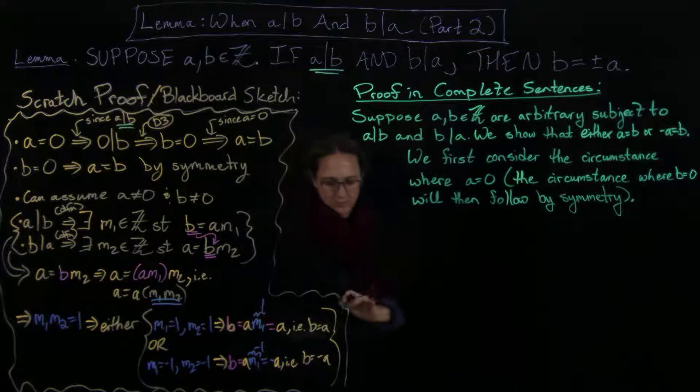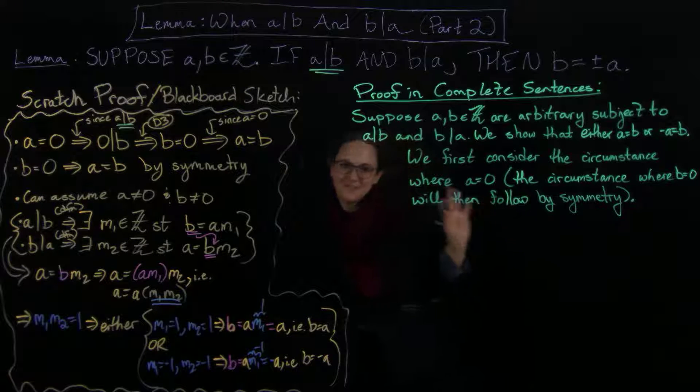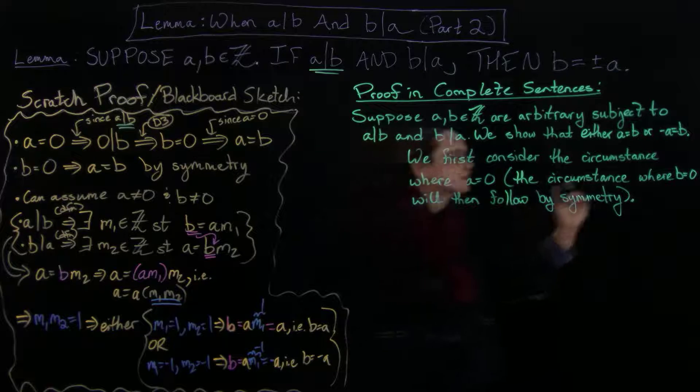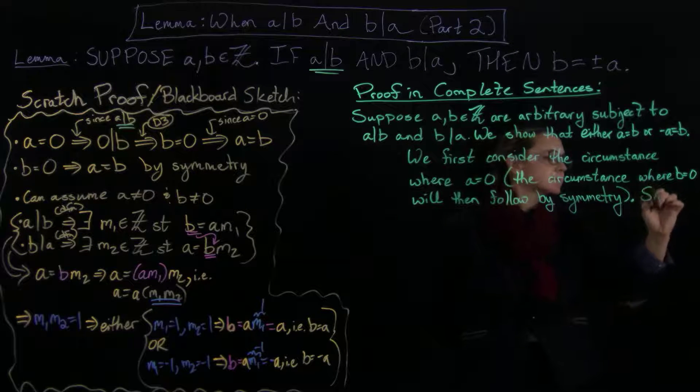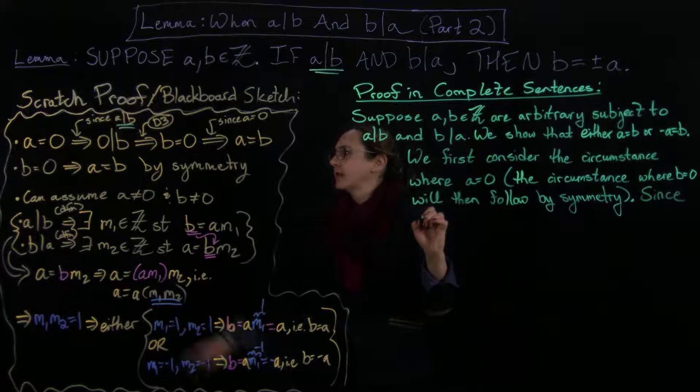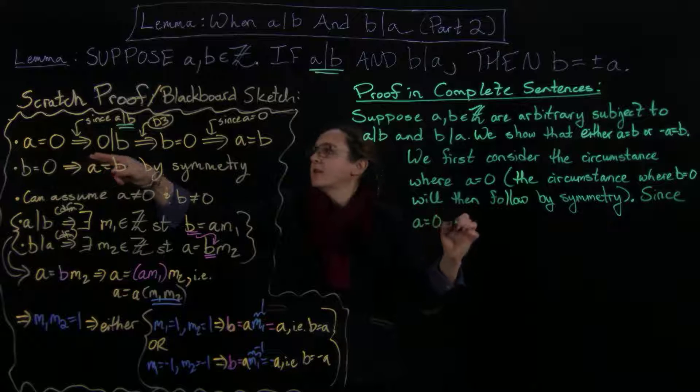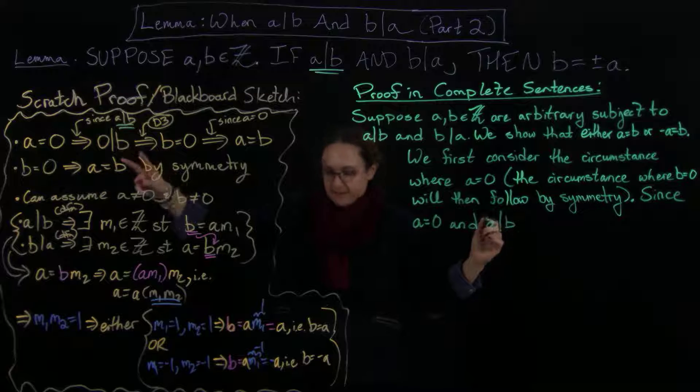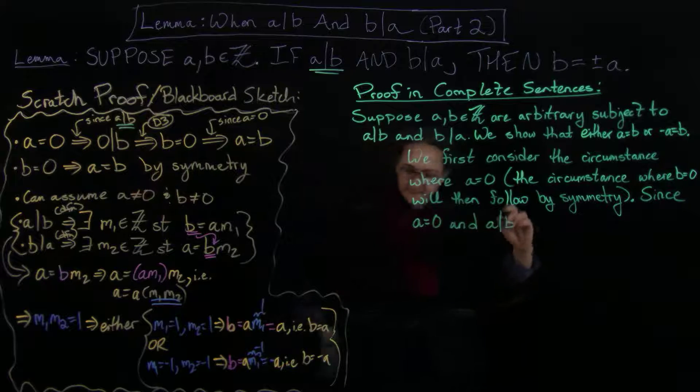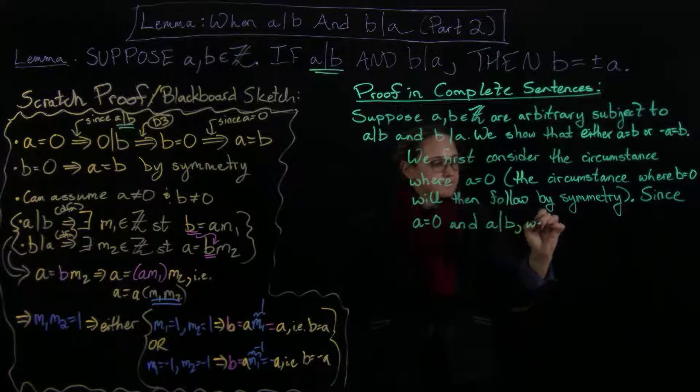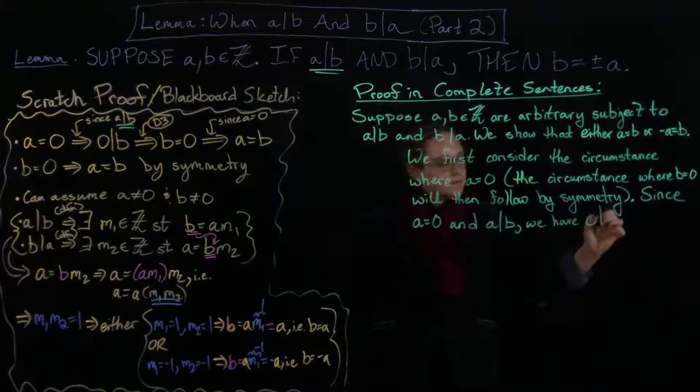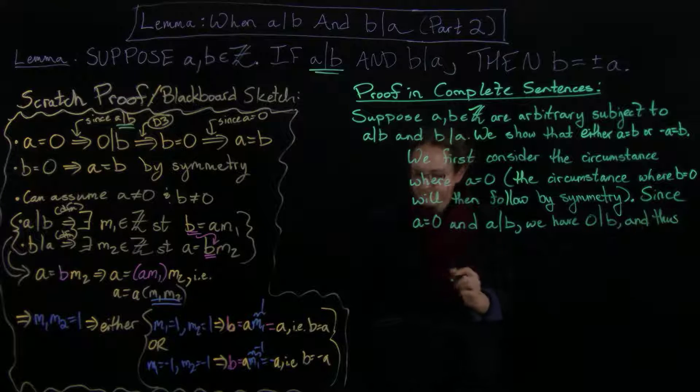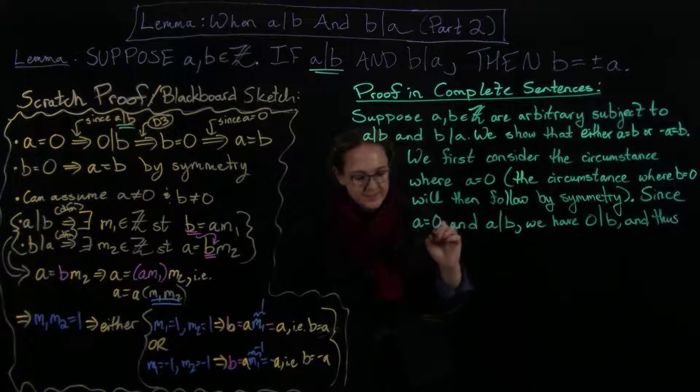Okay, onward. So since a equals zero and a divides b, we have that we have zero divides b, and thus b equals zero.